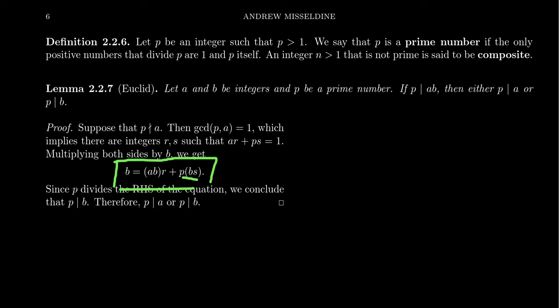Notice in terms of divisibility here, P divides itself. We also have by assumption that P divides AB. Since P divides AB and P, that forces B to be divisible by P, thus giving what we wanted. If P doesn't divide A, then it must divide B instead because we have a prime number.